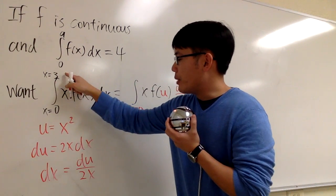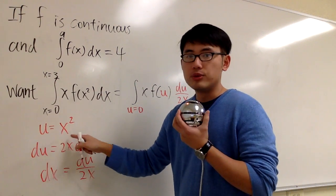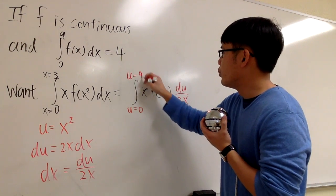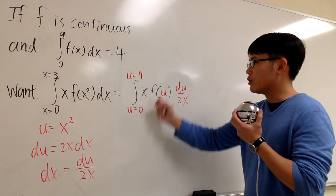When x equals 3, we plug 3 into here, u equals 3 squared, which will be 9. We know in the u world the integral will go from 0 to 9.